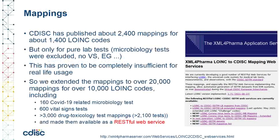CDISC did already a great job by publishing mappings between the most popular LOINC codes for lab tests, but this does not include microbiology tests such as needed for COVID-19 studies, toxicology tests, vital signs tests, challenges, ECG, and so on. Therefore, we extended the CDISC mappings to over 20,000 mappings for over 10,000 LOINC codes, including COVID-19 microbiology tests, over 600 vital signs tests, and several thousand drug toxicology tests.